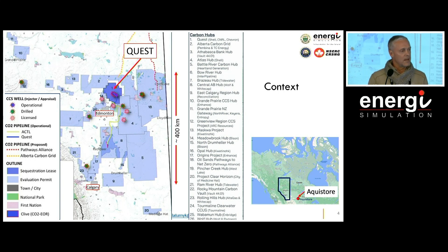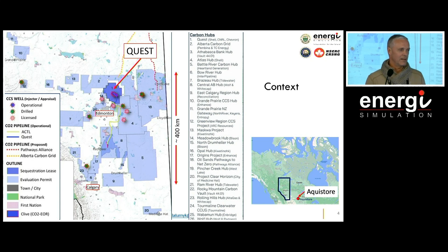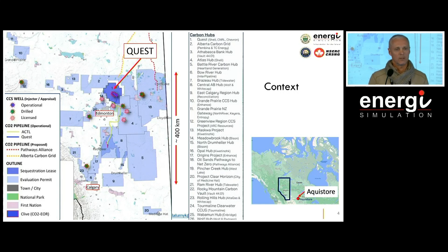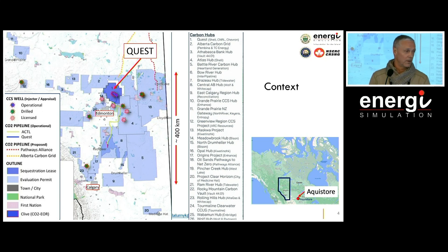Quest is surrounded now by a whole bunch of other projects going after primarily a basal Cambrian sandstone unit. But there are a bunch of brave souls to the west side of Alberta going at shallower carbonate targets, NISCU reef, shelf margin reef structures, pushing the boundaries a little bit. Inside these commercial applications, the calculation of capacity is central. If I look at number four on that list — that's the next legacy of Shell called Atlas — it's going to have a much higher injection target than Quest.